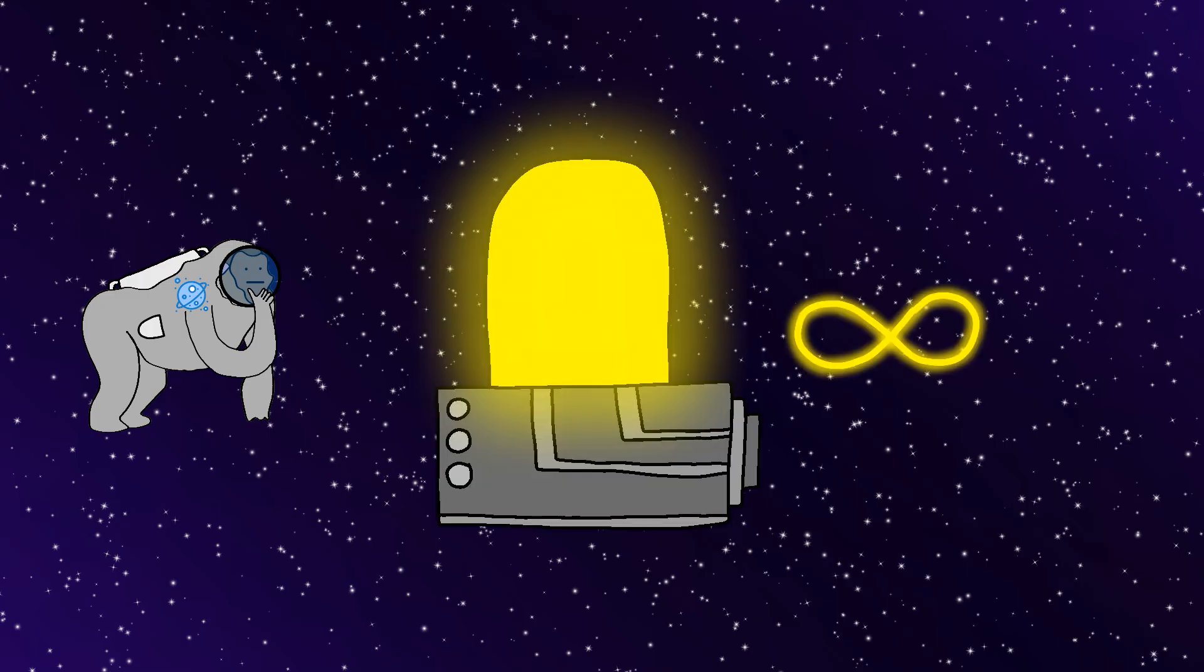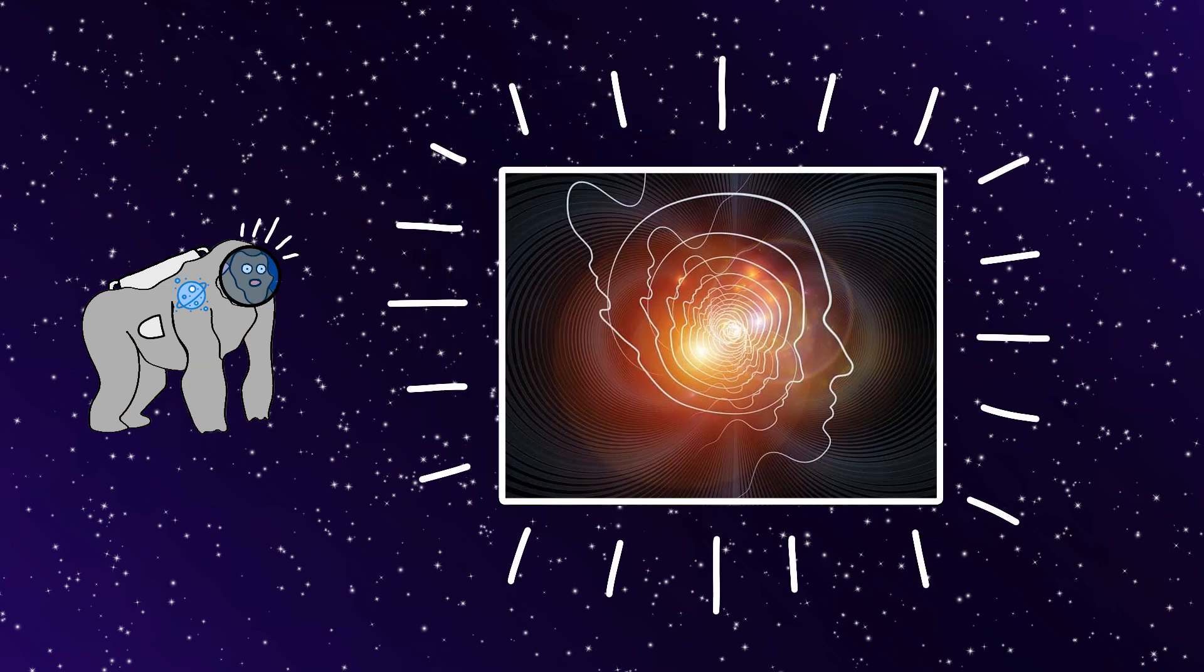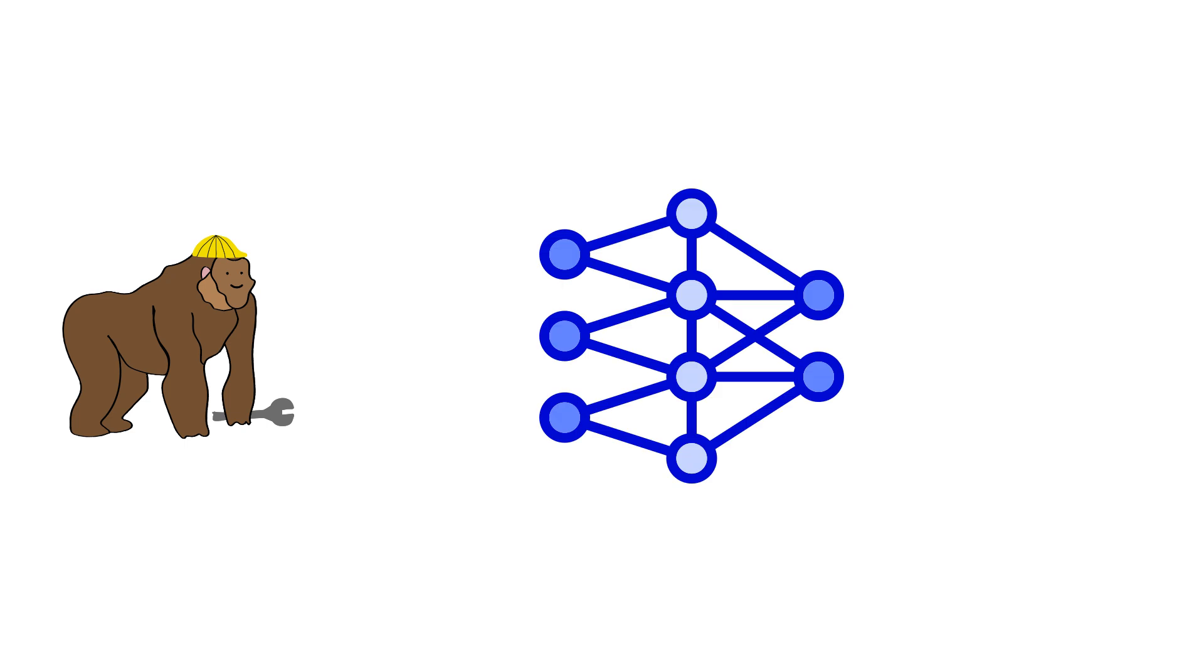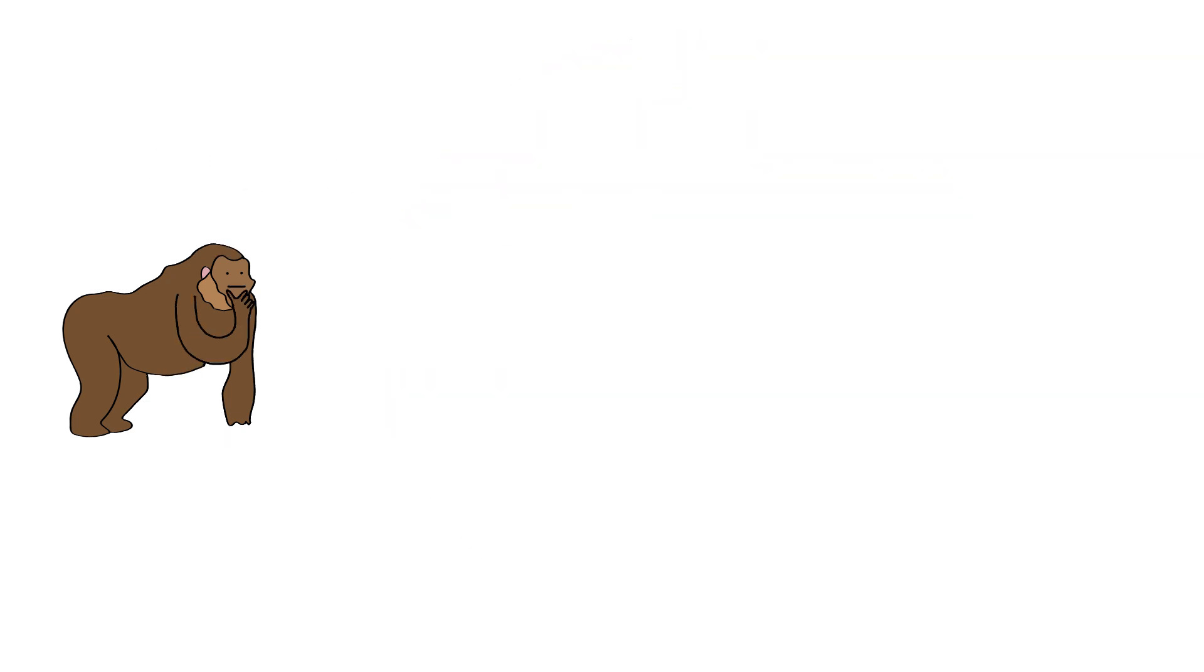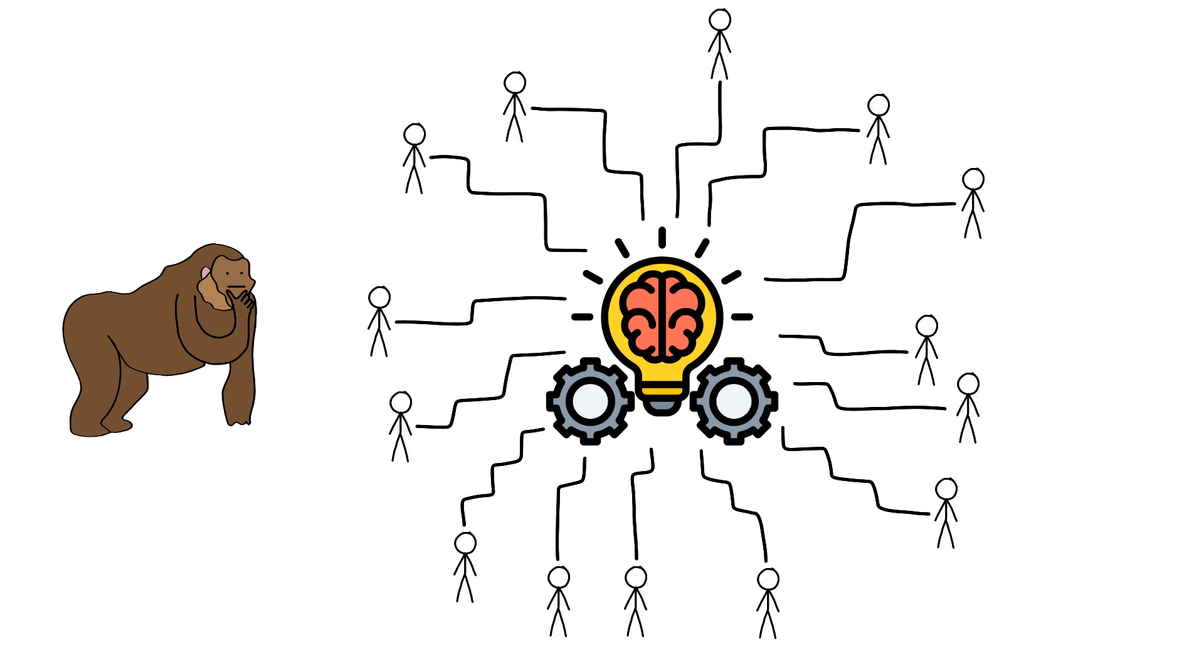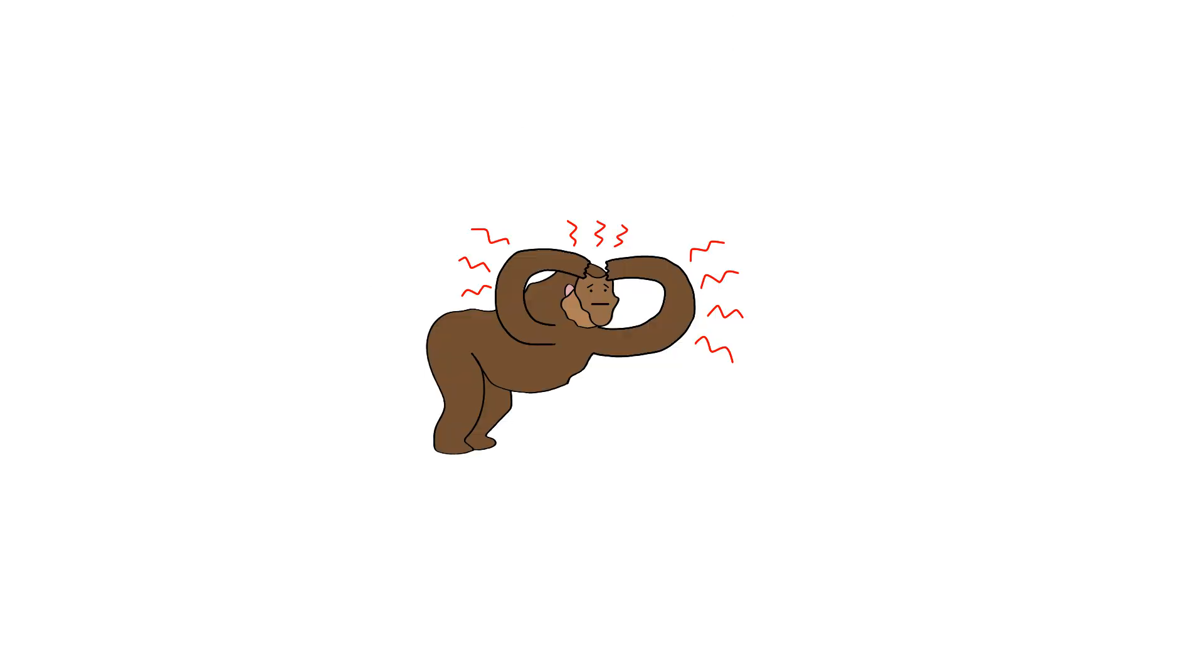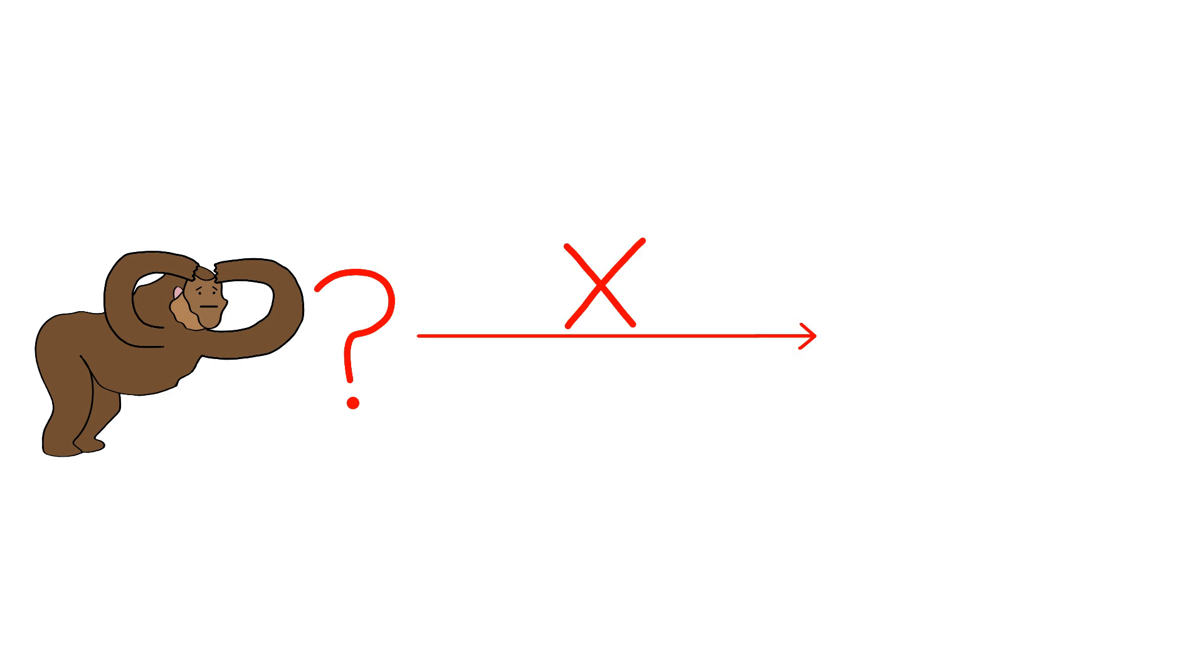And Monkey realizes that with unlimited energy, Monkey can experiment with consciousness itself. And Monkey starts building neural networks that span the entire sphere. And Monkey's thinking, Monkey could create a collective intelligence that includes every human. But Monkey's also terrified, because what if Monkey accidentally erases individual human consciousness in the process?